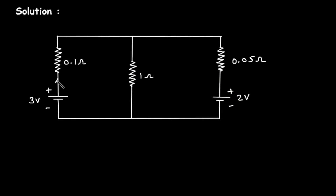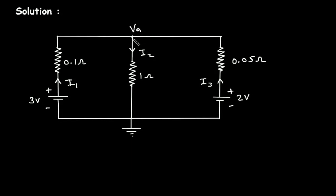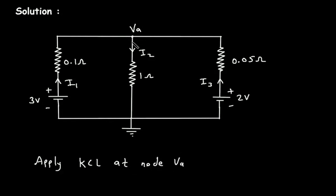For the solution, let's assume this is current I1, this is current I2, and this is current I3. Let's say this is the reference node. Now let's say this is node A with voltage VA. Now if we apply KCL,